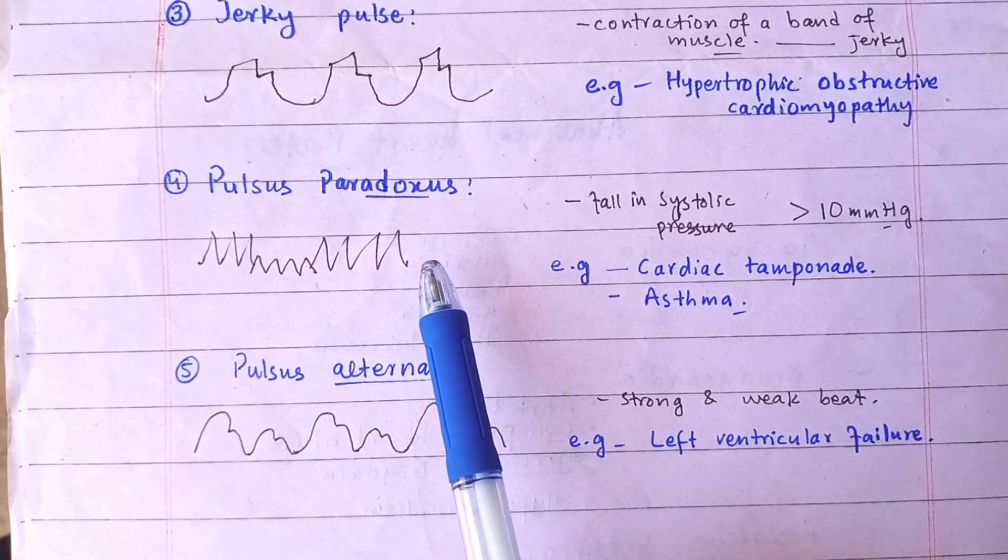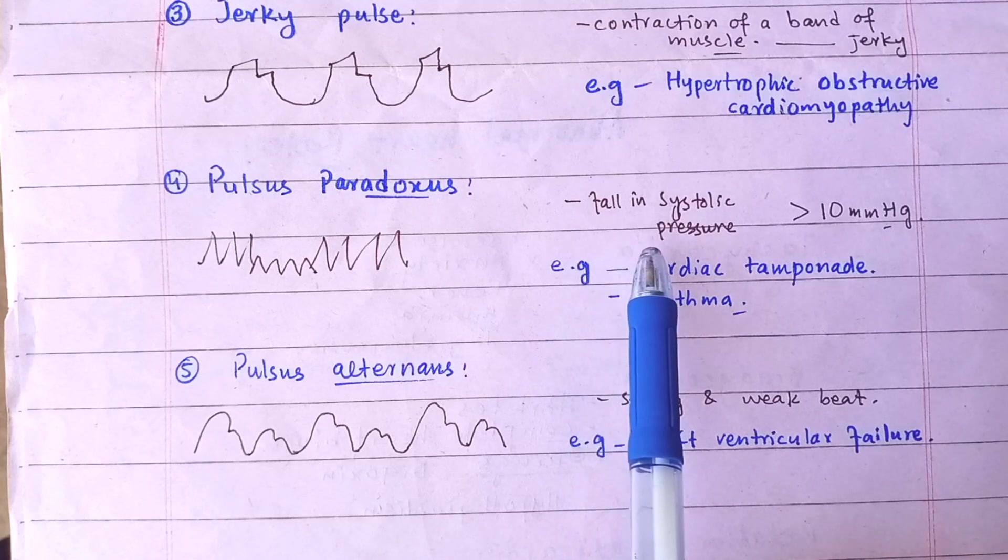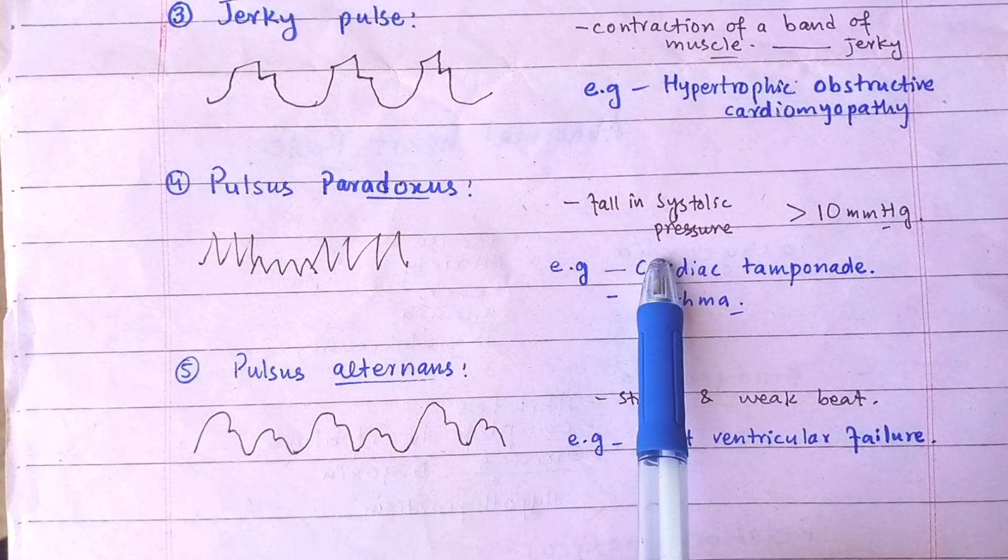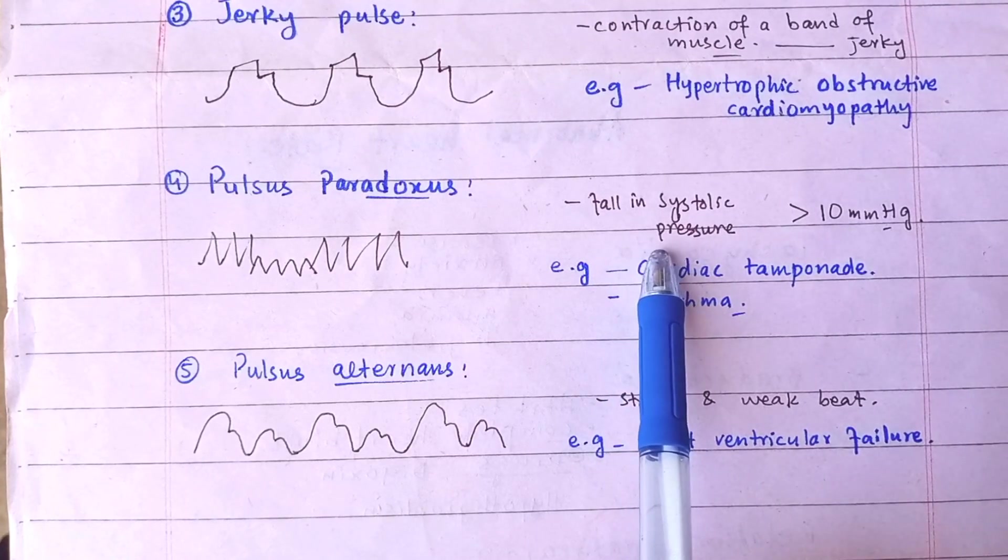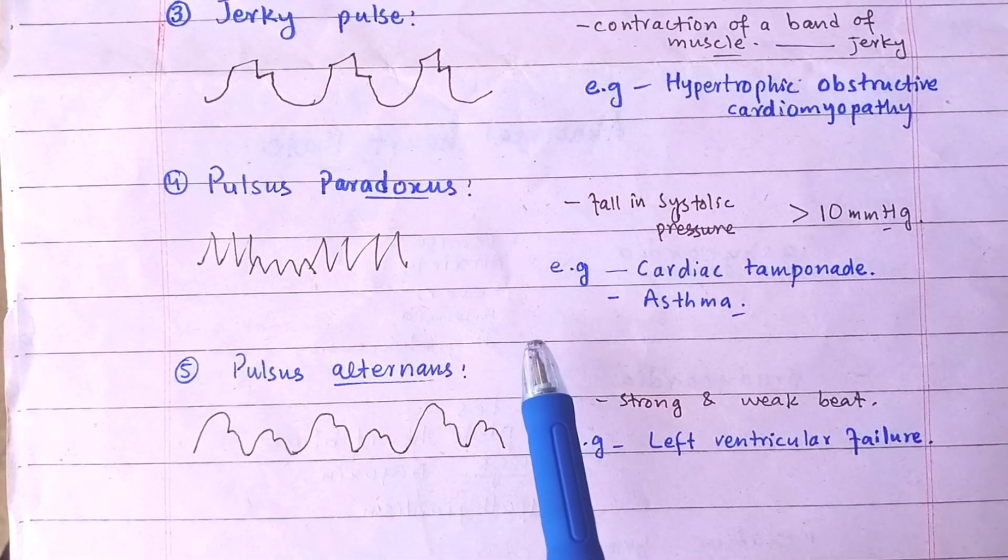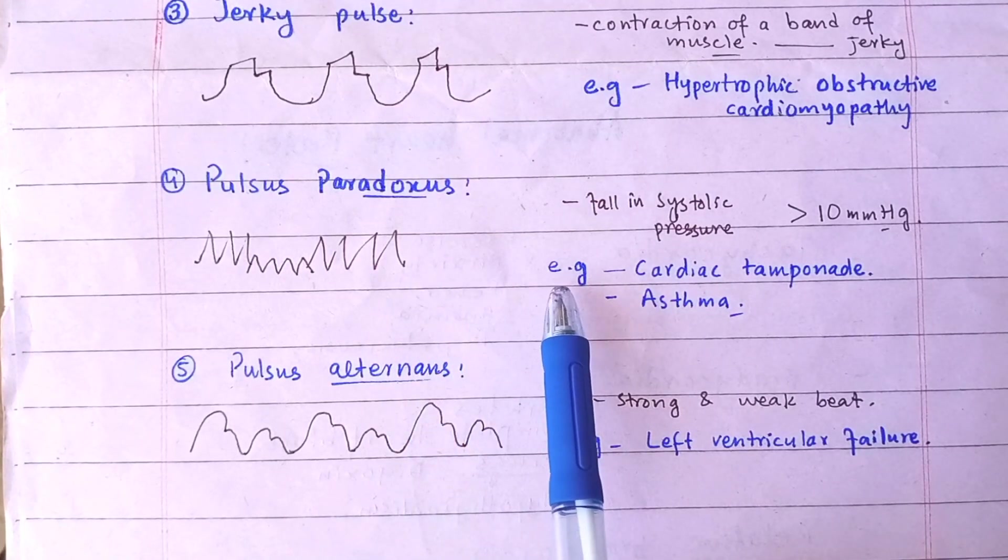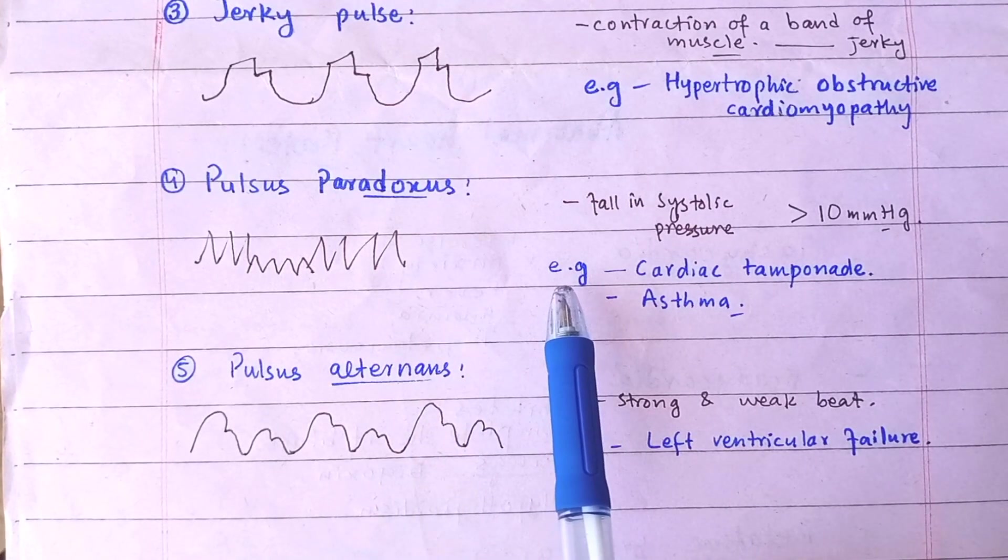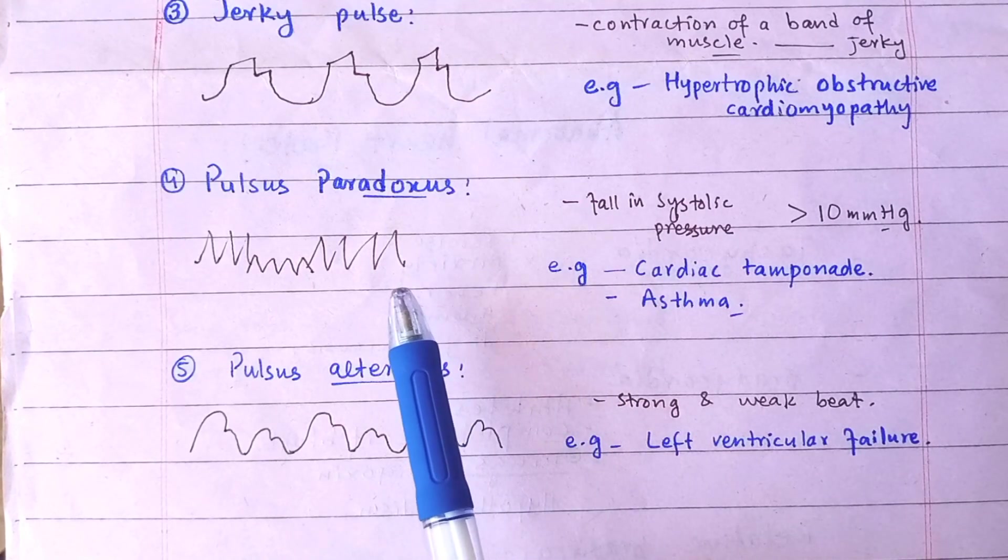Pulsus Paradoxus. Pulse either becomes weak or impalpable during inspiration. This is an exaggeration of normal phenomenon. Normally during inspiration, there is fall in the systolic pressure about 5 mm of mercury or less.